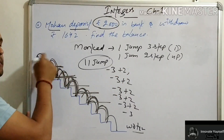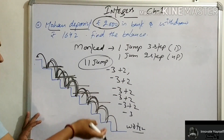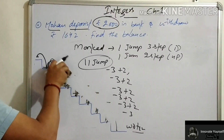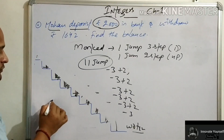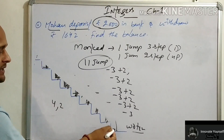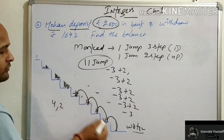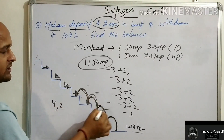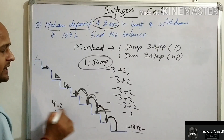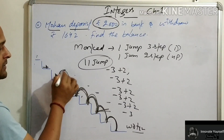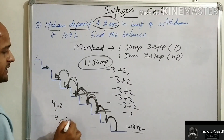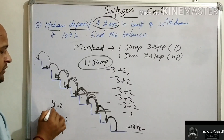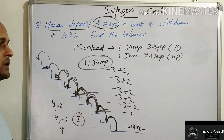Now the opposite question — the monkey wants to come back up from the water. Now it takes 4 steps upward in one jump and 2 steps downward in the next. So each cycle is plus 4 minus 2 equals net plus 2 steps upward. Counting the jumps going upward: 4 up, 2 down, 4 up, 2 down — after several cycles the monkey reaches the top. Total jumps needed to come back up are 5 jumps.